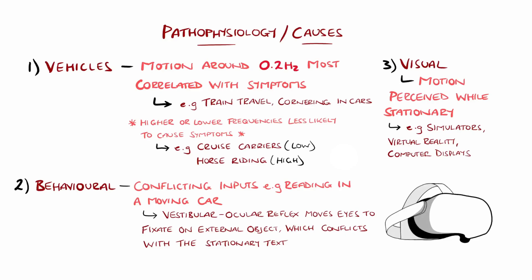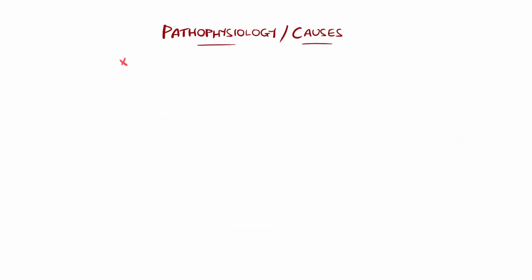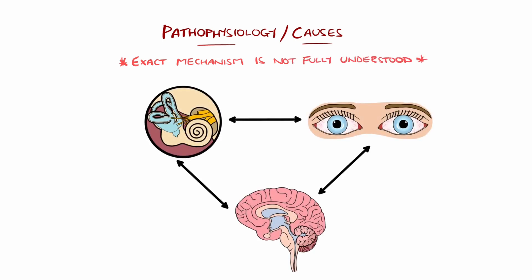The exact mechanisms by which nausea and vomiting are elicited by motion are not entirely understood, but it is well known that there are extensive connections between the vestibular system, ocular motor, and autonomic centres within the central nervous system.